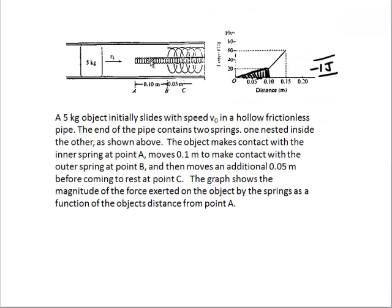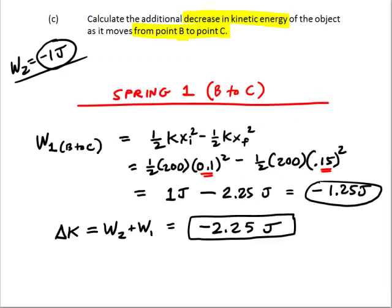That's this spring right here, the skinny one. And in order to get the total change in kinetic energy, it's the work done by both springs. Negative 2.25 joules. So that would be the change in kinetic energy. And you could leave it as negative 2.25 joules, or you could say it lost 2.25 joules.